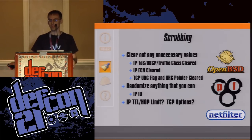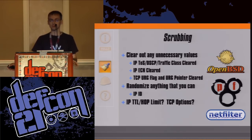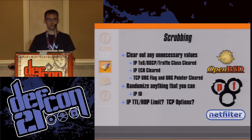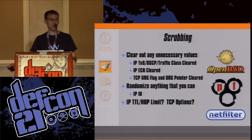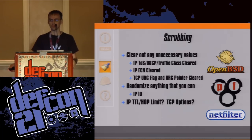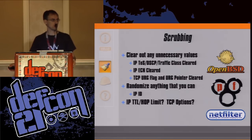Next, you want to randomize anything you can — like the IP ID — because NMAP and other tools do algorithm analysis. We don't want to give them an opportunity to reverse-engineer or match it with an algorithm they've previously enumerated. This left me with the IP time to live and the TCP options, where scrubbing and randomizing wouldn't work. A new technique was needed, and this is where I apply the normalization.